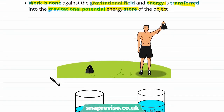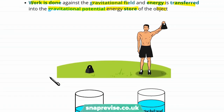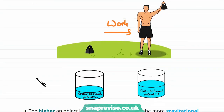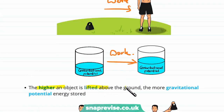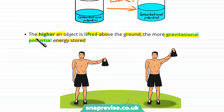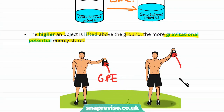If we look at this picture, we're lifting an object up in a gravitational field and this requires work to be done. Looking at the energy stores, this work transfers energy into the gravitational potential store. The higher an object is lifted above the ground, the more gravitational potential energy is stored.